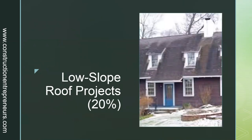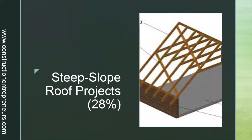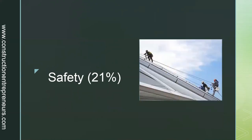Section three is low slope roof projects at 20%, covering three sections: one, installation — installing flashing, ventilation, and underlayment; two, installing various low slope roof systems; and three, repairing low slope roof systems. Number four, coming in at 28%, is steep slope roof projects, covering installing flashing, ventilation, and underlayment; installing various steep slope roof systems; and repairing steep slope roof systems.